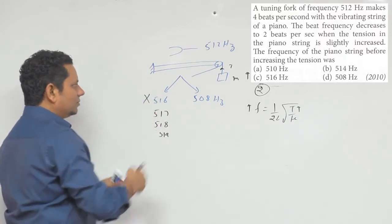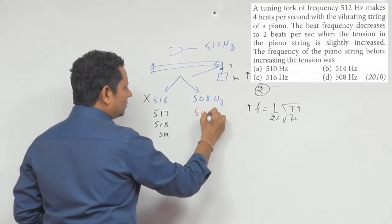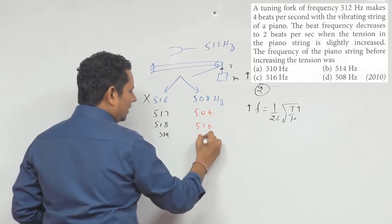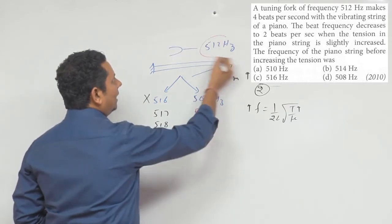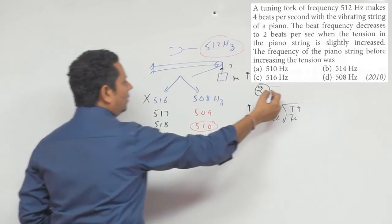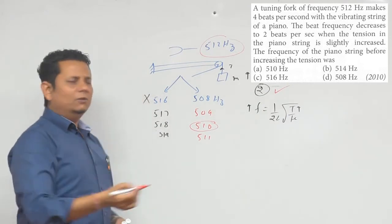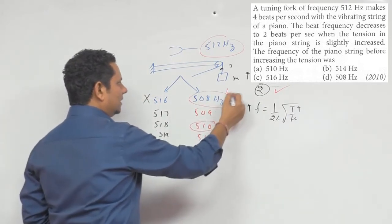But if we had 508 and it increased to 509, 510, 511, the difference from 512 decreases. This means 508 is the right answer.